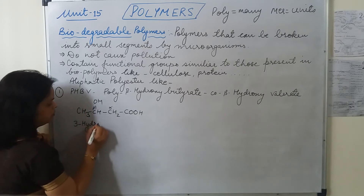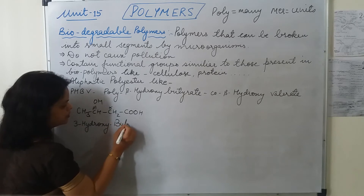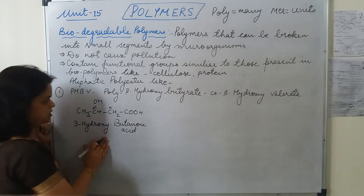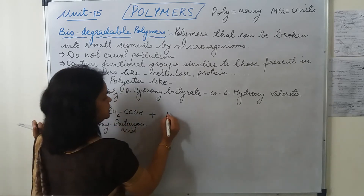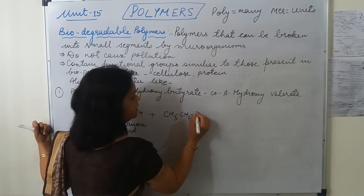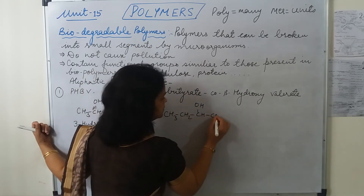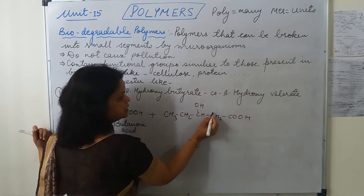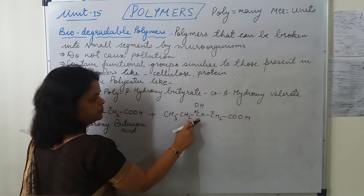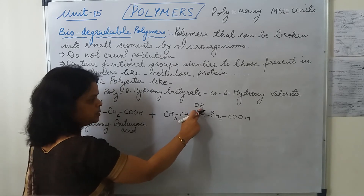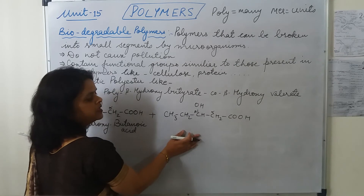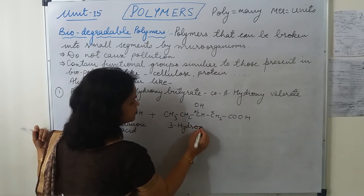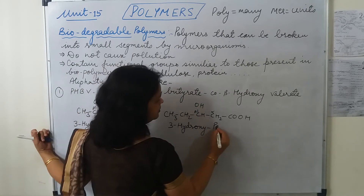For 3-hydroxybutanoic acid: there is a carboxylic acid group; the carbon attached to it is alpha and the next carbon is beta. To this beta carbon an OH group is attached, making it beta-hydroxy, and with 4 carbons it is butyric acid — so beta-hydroxybutanoic acid. For the second monomer, 3-hydroxypentanoic acid: the carboxylic acid is at carbon 1, the OH is at carbon 3 (beta-hydroxy), and with 5 carbons it is pentanoic acid.